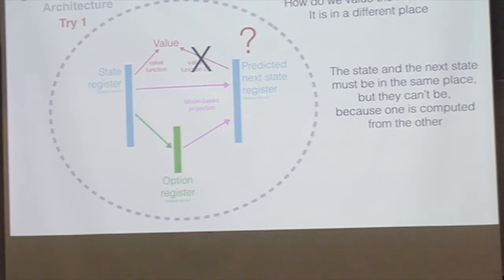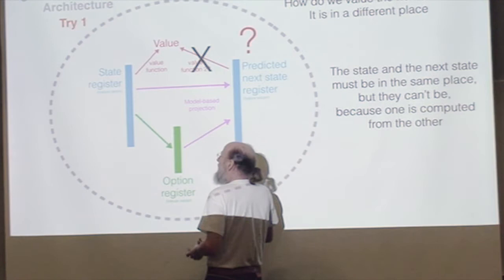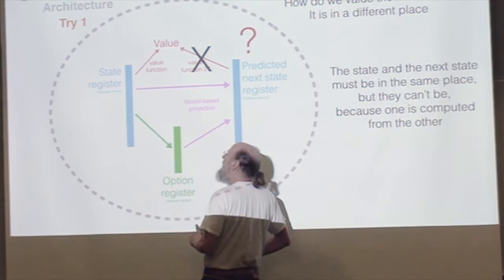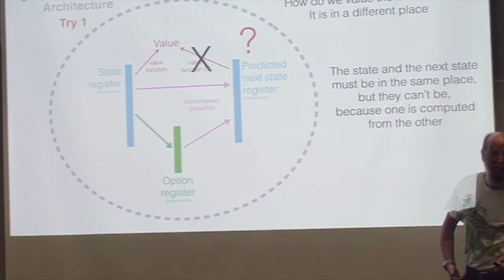You could think, I'll have this state and then I project forward and stick it back in the register. But that's going to have race conditions. While you're computing this thing, you're loading in the new one. You really need two places. You need this to be there and then compute this one. That's why I call this try one because I don't think it works, even though it's the usual way to think about it. I think we must have two state registers.